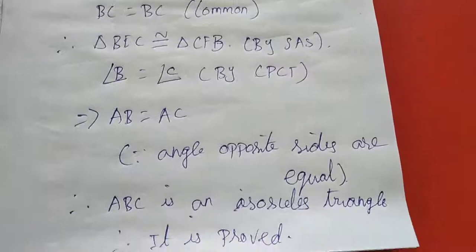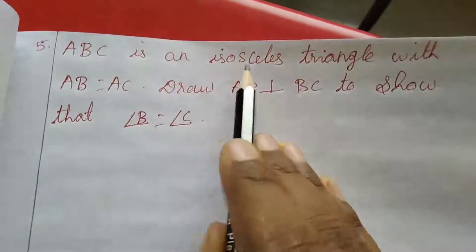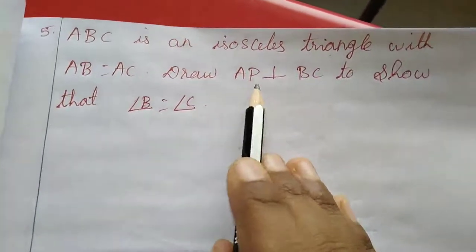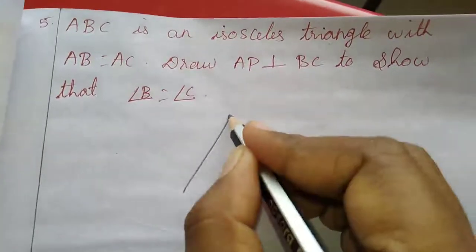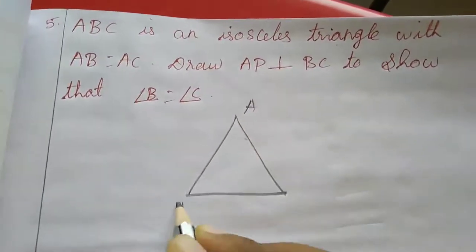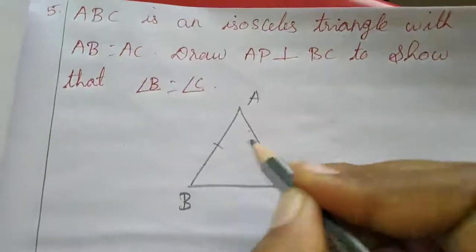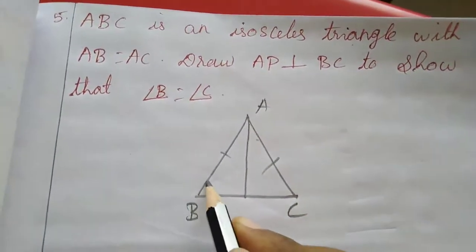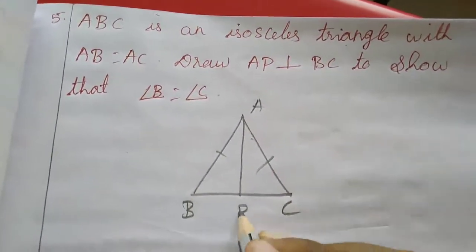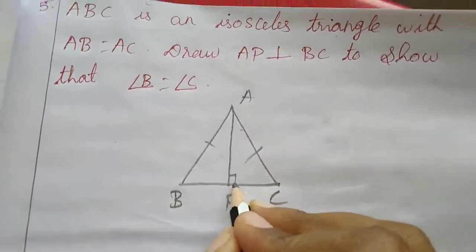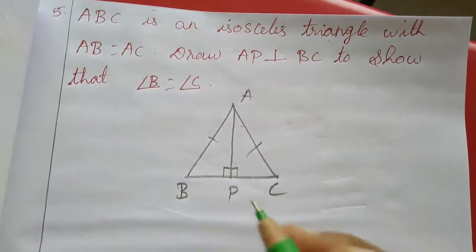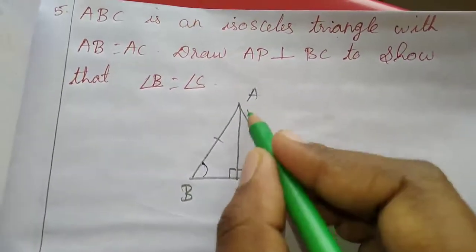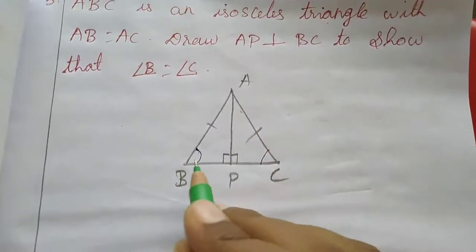Now we will move to the fifth sum. ABC is an isosceles triangle with AB equal to AC. AP is drawn perpendicular to BC. ABC is an isosceles triangle with AB equal to AC, so these two sides are equal. AP is drawn perpendicular to BC, so it will form 90 degrees. To show that angle B equal to angle C.